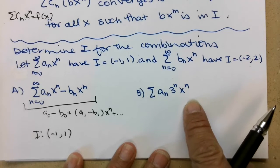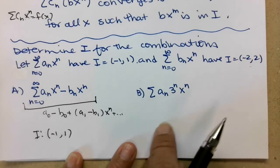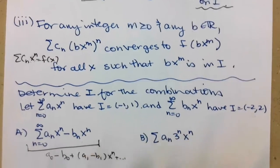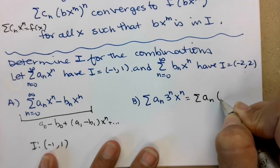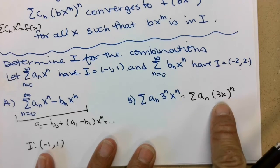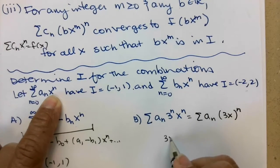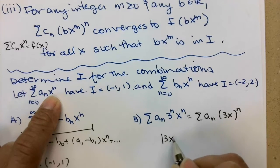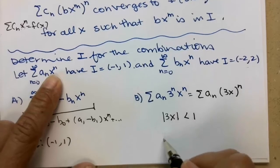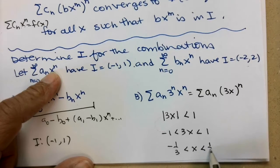What situation does the second example fall into? I have a sub n times 3 to the n times x to the n. Even though I've written it like this, it falls into option 3 — the substitution rule. If I rewrite this, I have x to the n, but then I have 3 times x to the n — so I've replaced the x with 3x. When it was just x, the interval was negative 1 to 1. Now it's valid when the absolute value of 3x is less than 1, so negative 1 less than 3x less than 1, giving negative 1 third less than x less than 1 third.